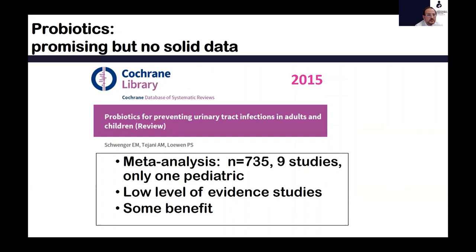What about probiotics? Probiotics are promising, but there is no solid data. A Cochrane review in 2015 performed a meta-analysis of nine studies, however only one was a pediatric study. There was a low level of evidence, but some benefit was noted — probiotics appear to help by boosting immune response and re-establishing a more prolific flora that protects against uropathogens that can cause UTI.